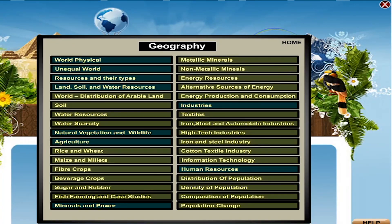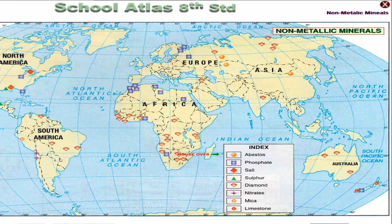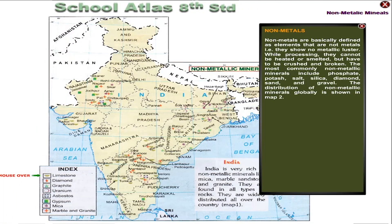Non-metallic Minerals. Non-metals are basically defined as elements that are not metals; that is, they show no metallic luster. While processing, they cannot be heated or smelted, but have to be crushed and broken. The most commonly occurring non-metallic minerals include phosphate, potash, salt, silica, diamond, sand and gravel. The distribution of non-metallic minerals globally is shown in Map 2.